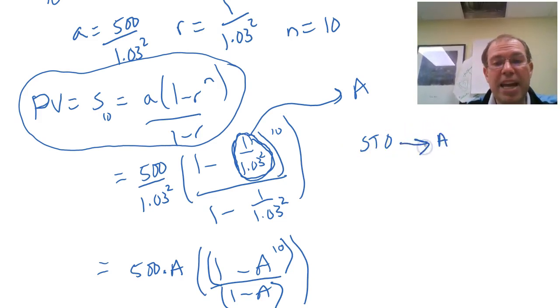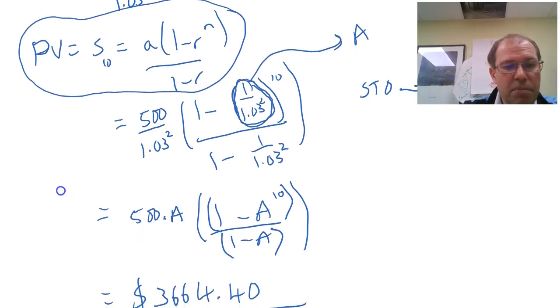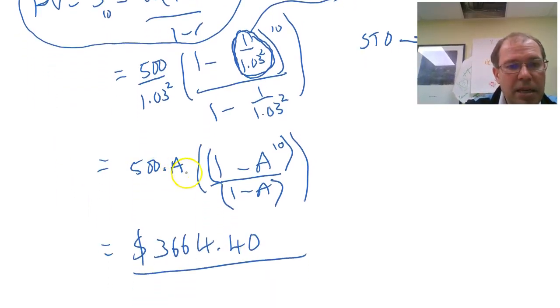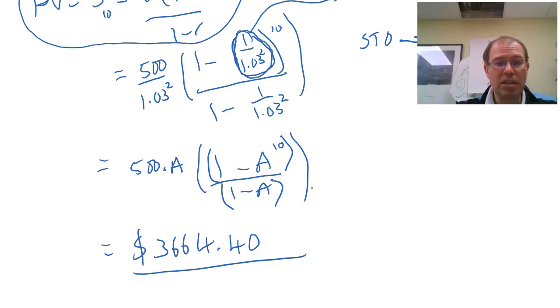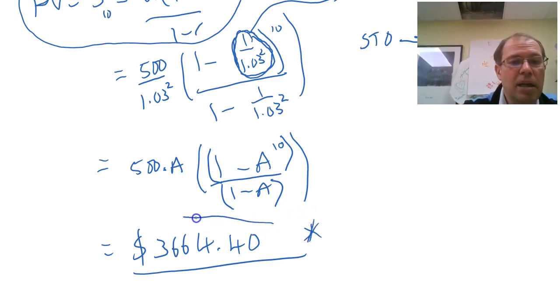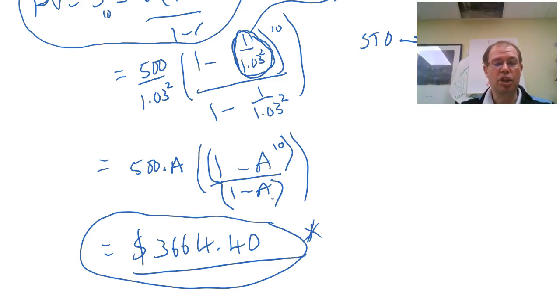When I entered it in my calculator, I didn't need to enter that 1 divided by 1.03 squared. I just did, and be careful with your brackets, I did 500 times A, times open bracket, and then if you're using the calculator use more brackets, open brackets, 1 minus A to the power of 10, close bracket, divided by, open a bracket, 1 minus A, close bracket, and then close your big bracket. Try it yourself, do this question, check that you can use the calculator, that's an important skill as well, and you should get that the cost of the annuity is $3,664.40 to two decimal places.